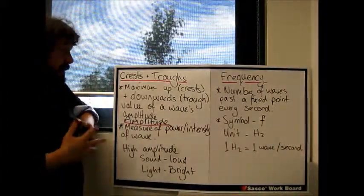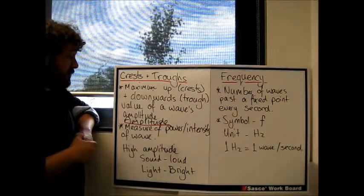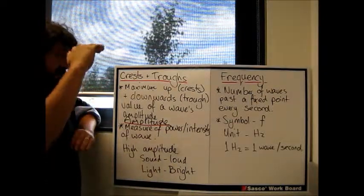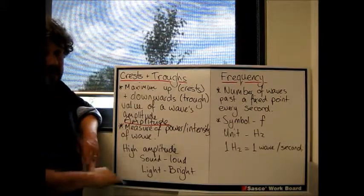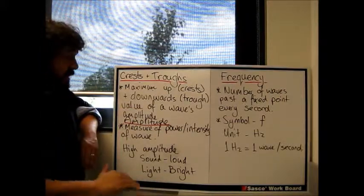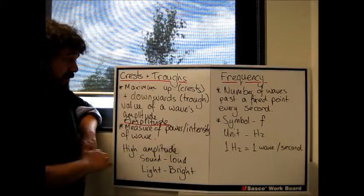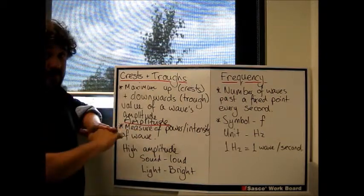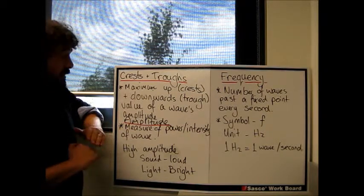The next, we've got three on here. We've got crests and troughs. So the crest is the maximum up value of a wave, so above the resting point. Trough is below the resting point, and they're equal, they cancel out in the middle. Again, a wave is a mathematical feature, a mathematical thing.